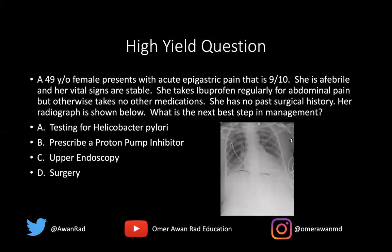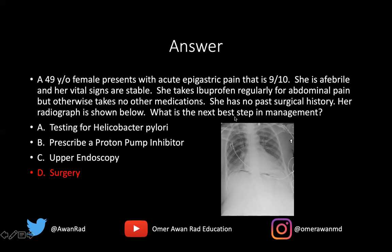Coming back to the original high-yield question: 49-year-old female with acute epigastric pain of 9 out of 10, afebrile, vital signs stable, takes ibuprofen regularly, no past surgical history, with a radiograph shown. She's not greater than 50 years old, but she has epigastric pain and a risk factor for peptic ulcer disease — ibuprofen, an NSAID. This is likely a case of peptic ulcer disease, but there's free air under the diaphragm, which means the ulcer has perforated. That's a surgical emergency, so the answer is surgery. This question tests your ability to identify free air under the diaphragm and recognize peptic ulcer disease in the clinical vignette.